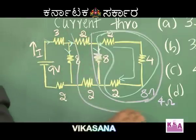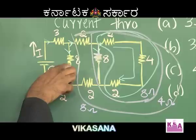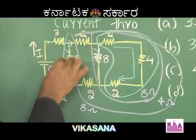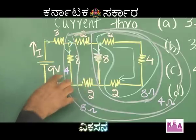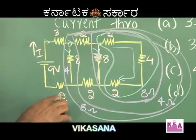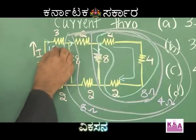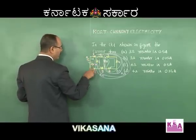This is 8 ohm. This 8 is in parallel with this 8, that will give us 4 ohm. This 4 plus 3 plus 2 will give us 9 ohm. So 9 volt divided by 9 ohm gives us 1 ampere. 4 plus 3 is 7, plus 2 is 9. 9 ohm is the resistance.